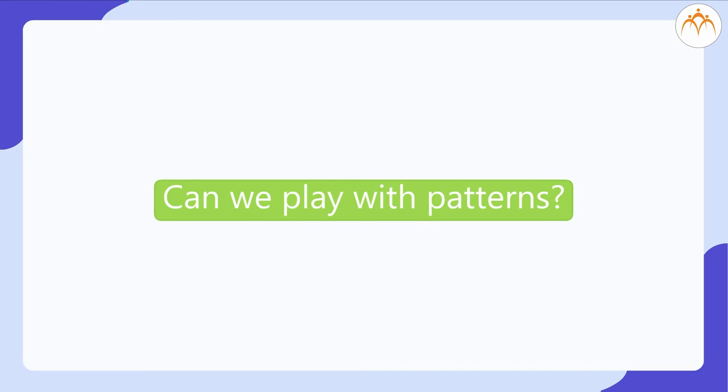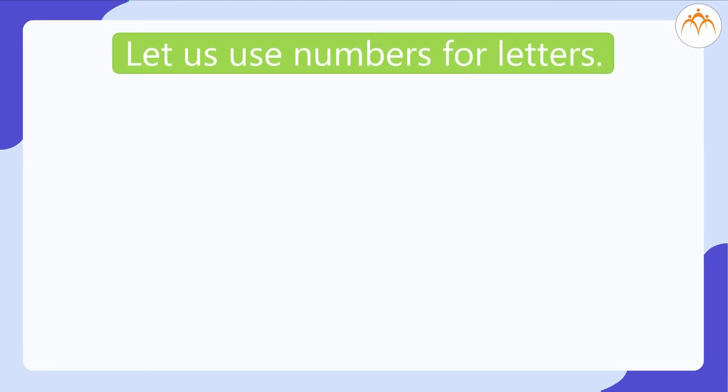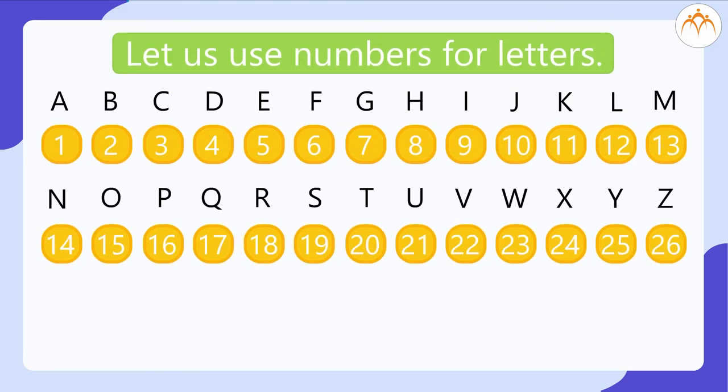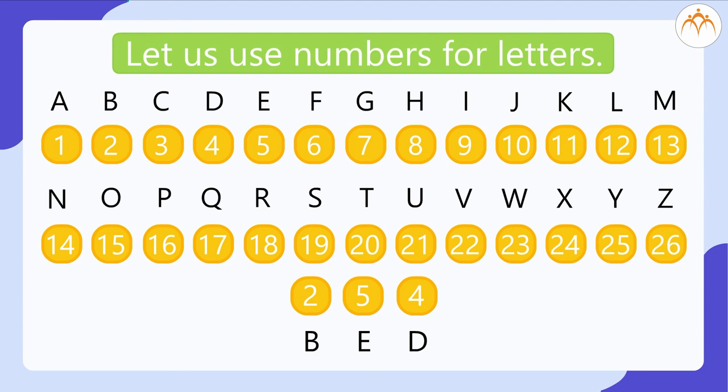Can we play with the pattern? Let us play a game of sending secret messages. Let us use numbers for letters. So A, B, C, D, E, F, G up to Z can be written as 1, 2, 3, 4, 5, 6, 7 up to 26. Now, if I write these numbers 2, 5, 5, 4 for the corresponding letters, then what do you mean by it? For 2 we have B, for 5 we have E and for 4 we have D. The word is B, E, E, D, bed.